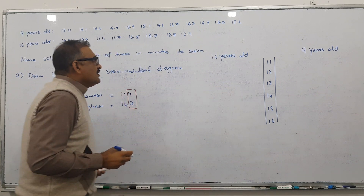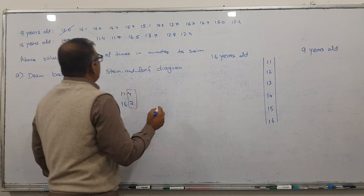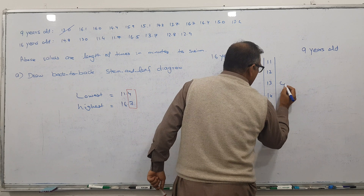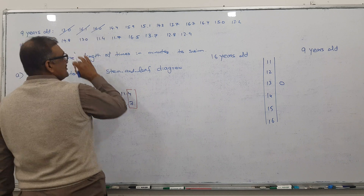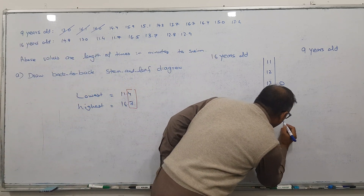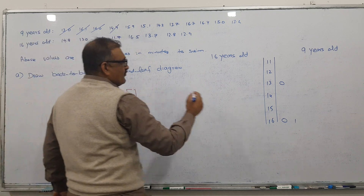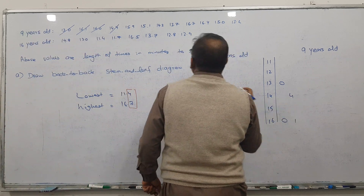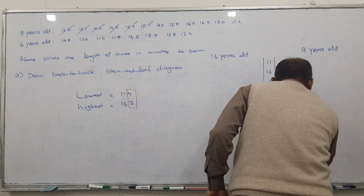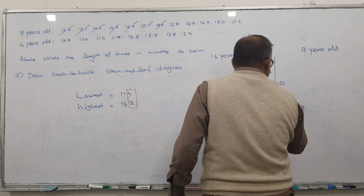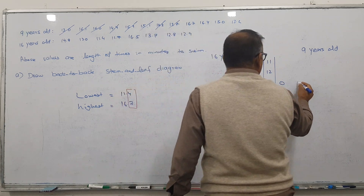Let's start plotting. 13.0 — I write 0 here. 16.1 — I write 0 and 1 here. 14.4 — I'm writing here. 14.4 before it means 13.7, so 13.7 goes here.